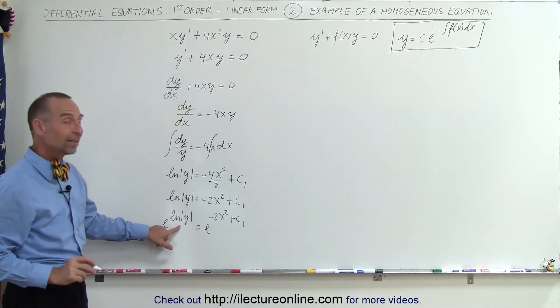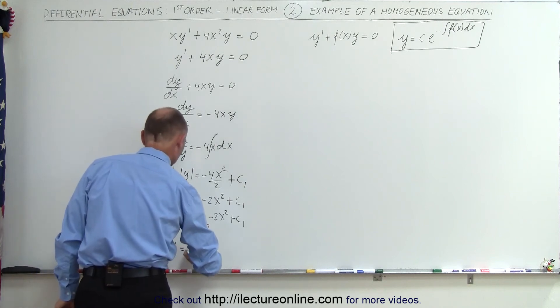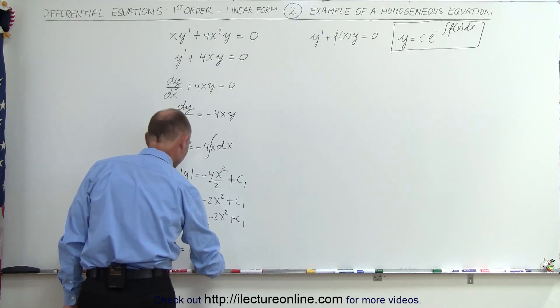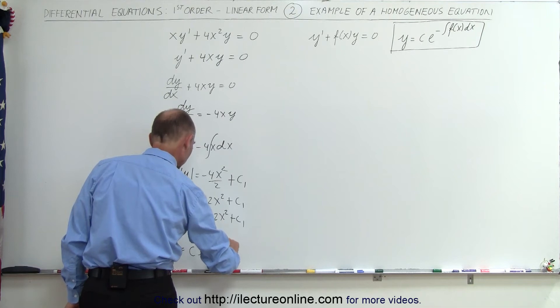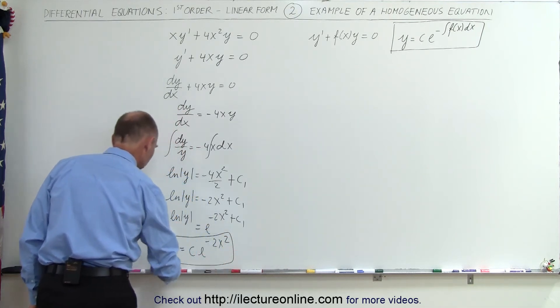Of course, this negates the natural log, so this simply becomes y equals some constant, because e to the c1 is simply another constant, times e to the minus 2x squared. That would then become the solution to our homogeneous equation.